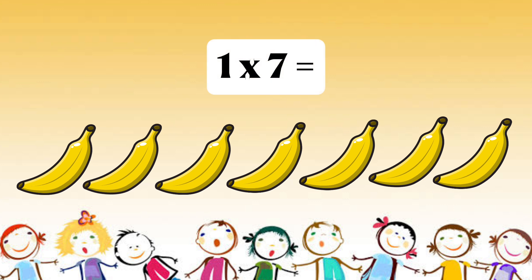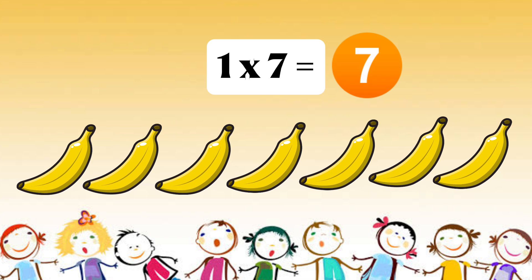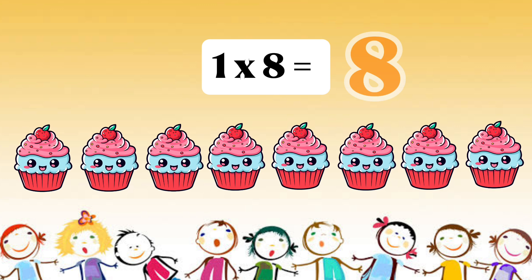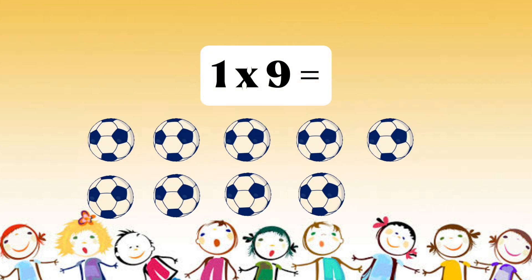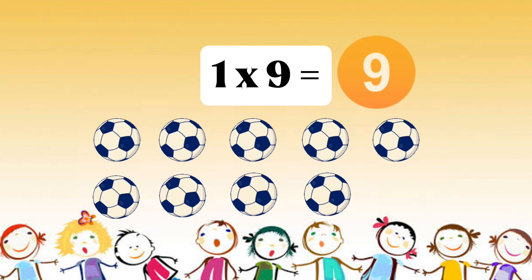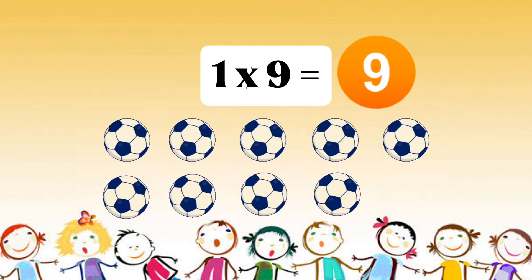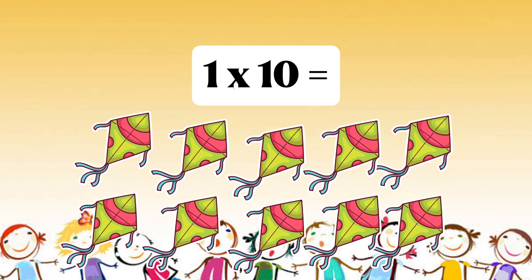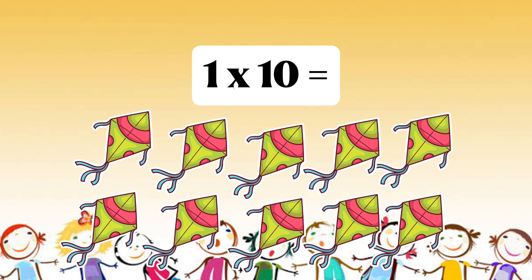1 multiplied by 7, or 1 times 7, equals 7. 1 multiplied by 8, or 1 times 8, equals 8. 1 multiplied by 9, or 1 times 9, equals 9. 1 multiplied by 10, or 1 times 10, equals 10.